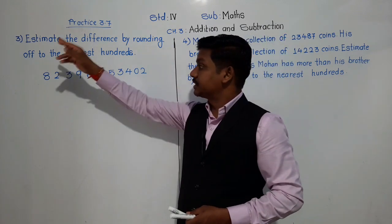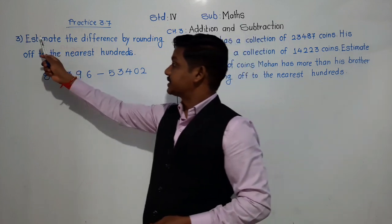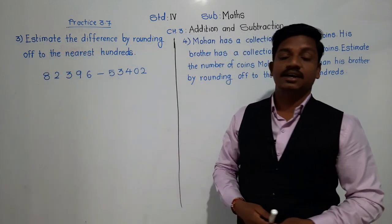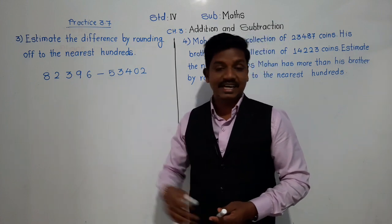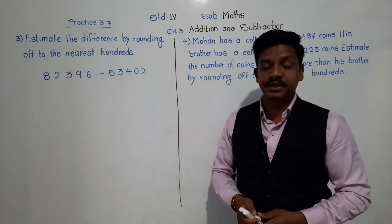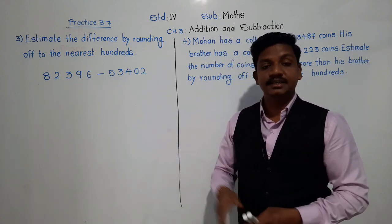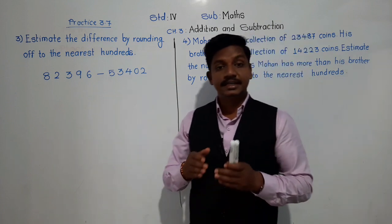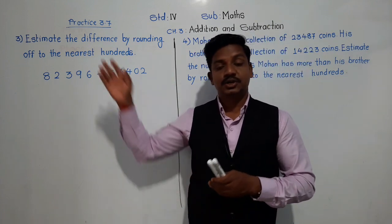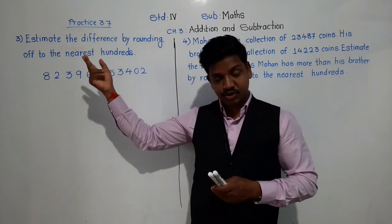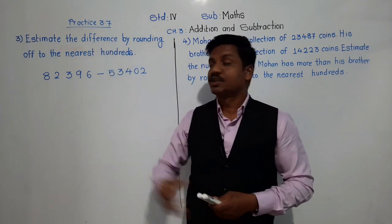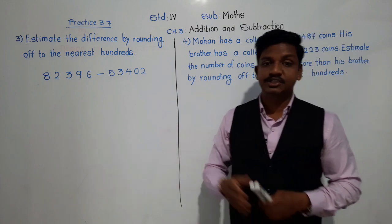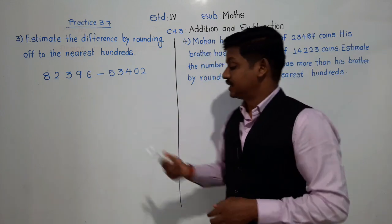Problem number 3: estimate the difference by rounding off to the nearest hundreds. In the last lecture, the first two problems were solved by rounding off to the nearest tens. So this is the problem in which we have to estimate the difference to the nearest hundred. Let us go for it.